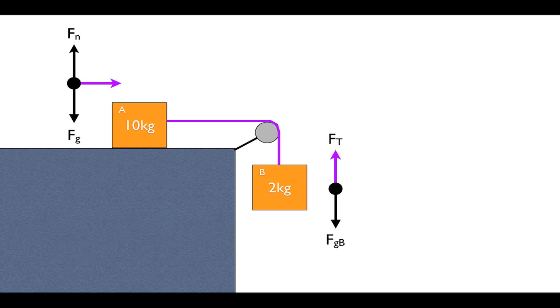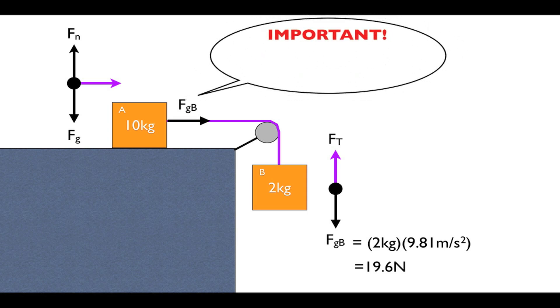All the rope in this problem was actually doing was changing the direction of the force of gravity from box B. In other words, the weight from box B was being redirected by the rope to move box A along the surface. So let's just forget about tension for now and instead create a different but equivalent problem that focuses on the forces that are actually doing the moving.